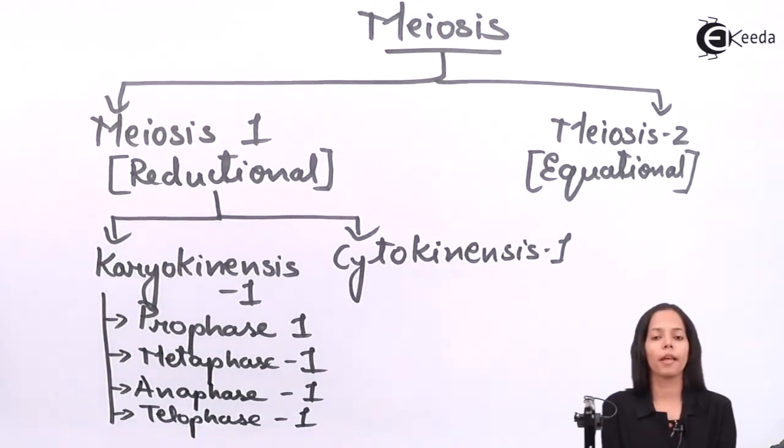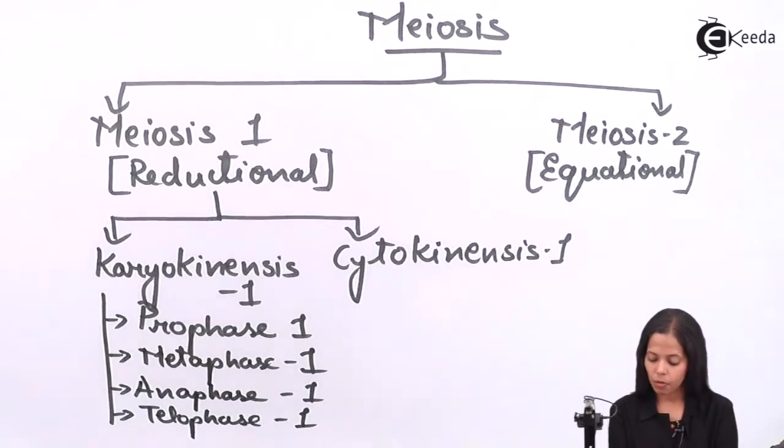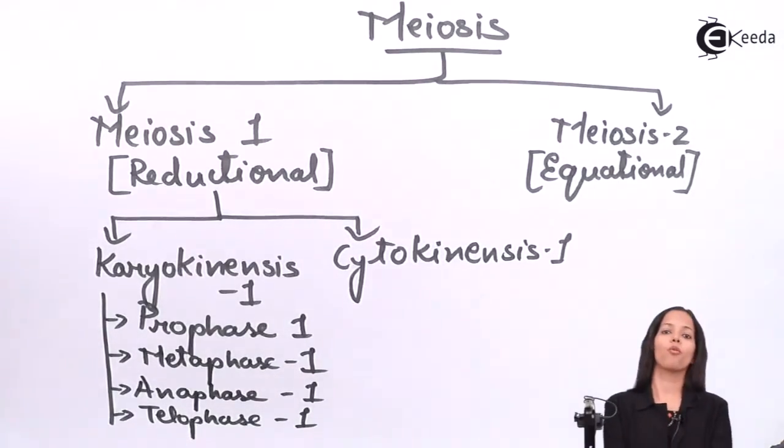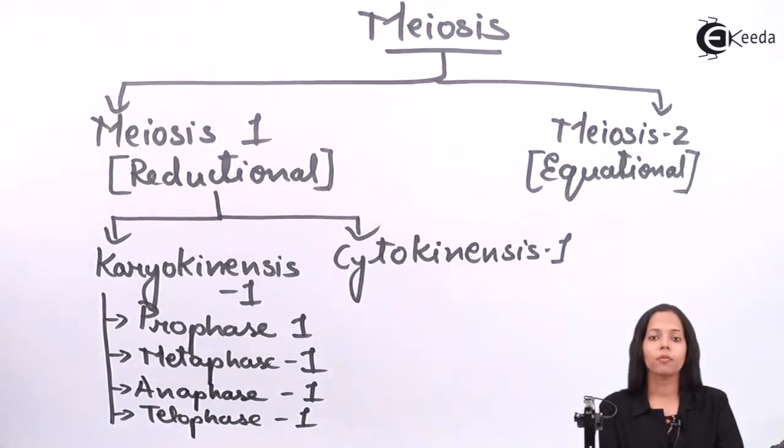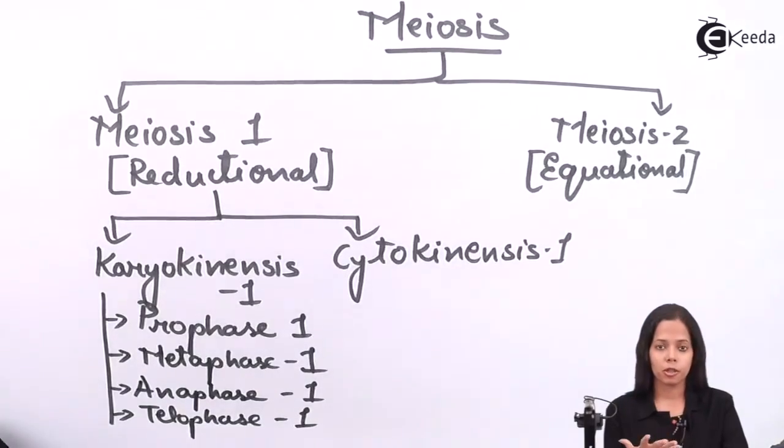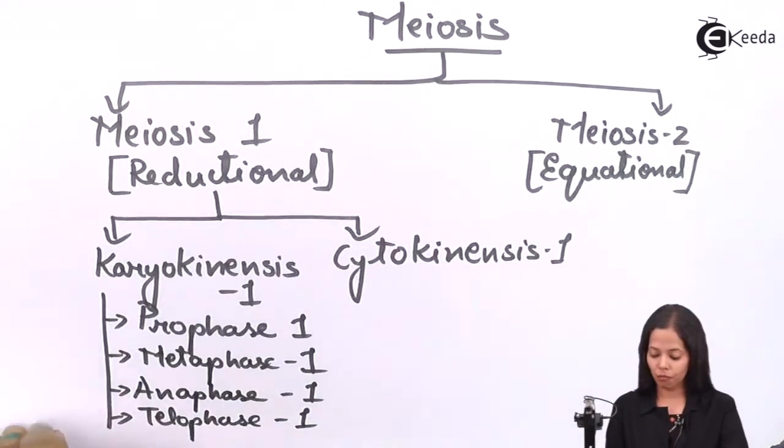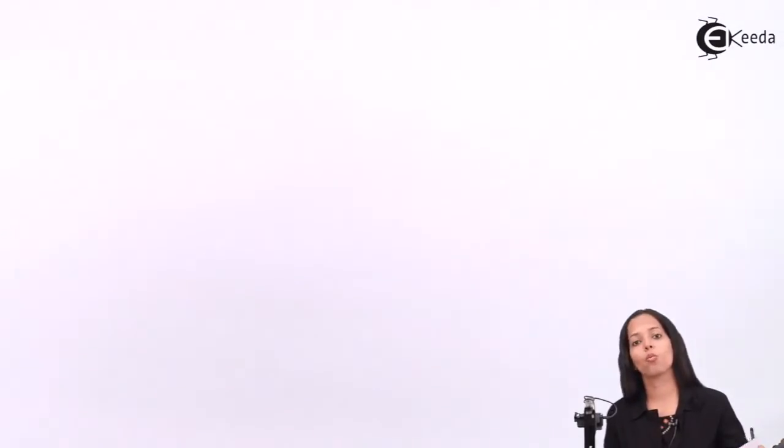Now we have same thing in meiosis 2 and it will be termed as karyokinesis 2, cytokinesis 2, prophase 2, metaphase 2, anaphase 2 and telophase 2. Now let's see what are the phases in prophase 1. Now speaking about student meiosis prophase 1, it is further divided into 5 stages. Now let's see what are the 5 stages of prophase 1.